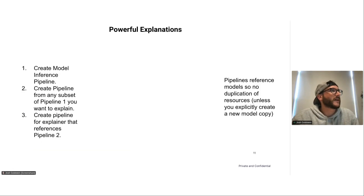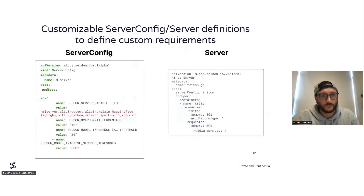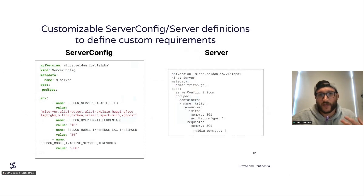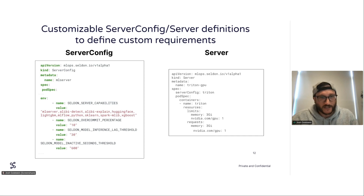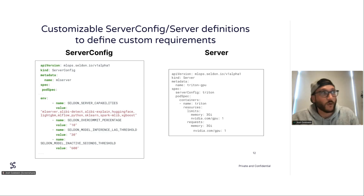Here's an example of how you can run with that explanation pipeline. And finally, we have the customizable servers and the server configs. This is how you bring those custom dependencies to the table. You can use these as templates if you need to add certain things into the pods in Kubernetes, like metrics or infrastructure policy type things. You have that flexibility with these server and server configs.